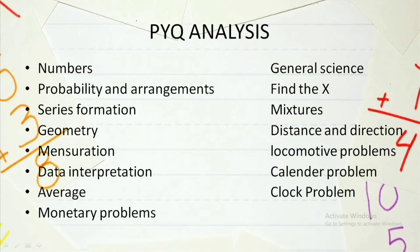If we look at quantitative aptitude, the questions are mainly repeated from the first topic: numbers, that is the various types of numbers we have like whole numbers, prime numbers, etc. Then we have questions from probability and arrangement. You can every year expect one question from this particular area. Then we have series formation. This is also one of the frequently repeated topics and you can easily find one question in every year.